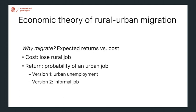In what follows, we will consider two versions of this model. In the first one, if the migrant doesn't get the good urban job, they remain unemployed. In the second one, they will find an informal job.